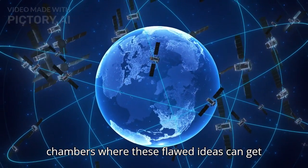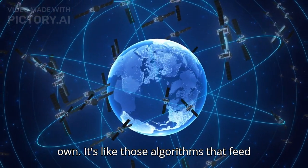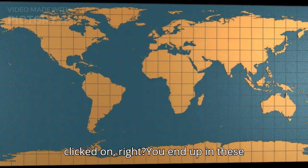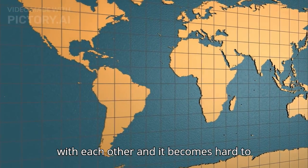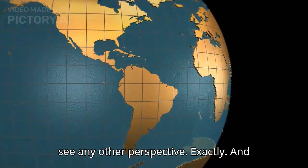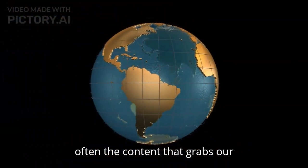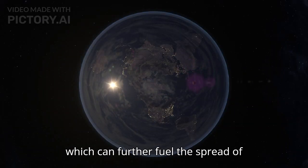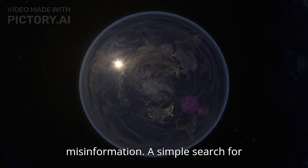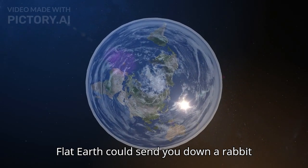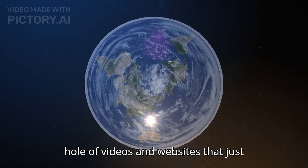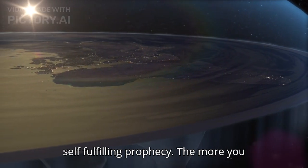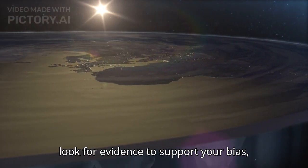But there's also the allure of simplicity. The flat earth model with its flat disc and a dome might seem more straightforward than the vastness of a spherical earth hurtling through space. But even if you're looking for a simple explanation, shouldn't it at least make sense? Ideally yes, but we humans have this thing called confirmation bias. We tend to gravitate towards information that confirms our existing beliefs, even if that information is shaky or misleading.